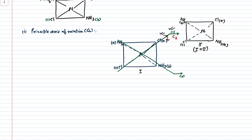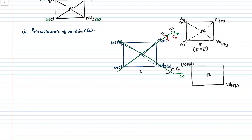Now do the same C2 operation about axis number two — rotation by 180 degrees. This time the ammonia positions will not change; ammonia A and B remain in place. But the chlorine positions will interchange: Cl A takes the position of Cl C and Cl C takes the position of Cl A. When we compare structure 3 with structure 1, they are equivalent. So this C2 is also a symmetry element.